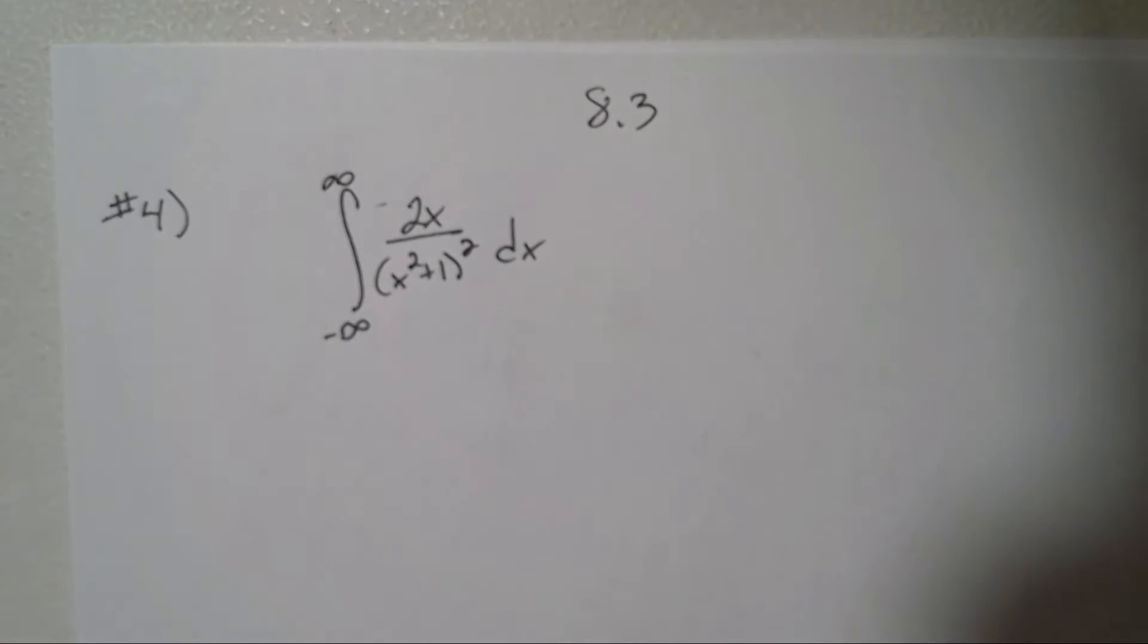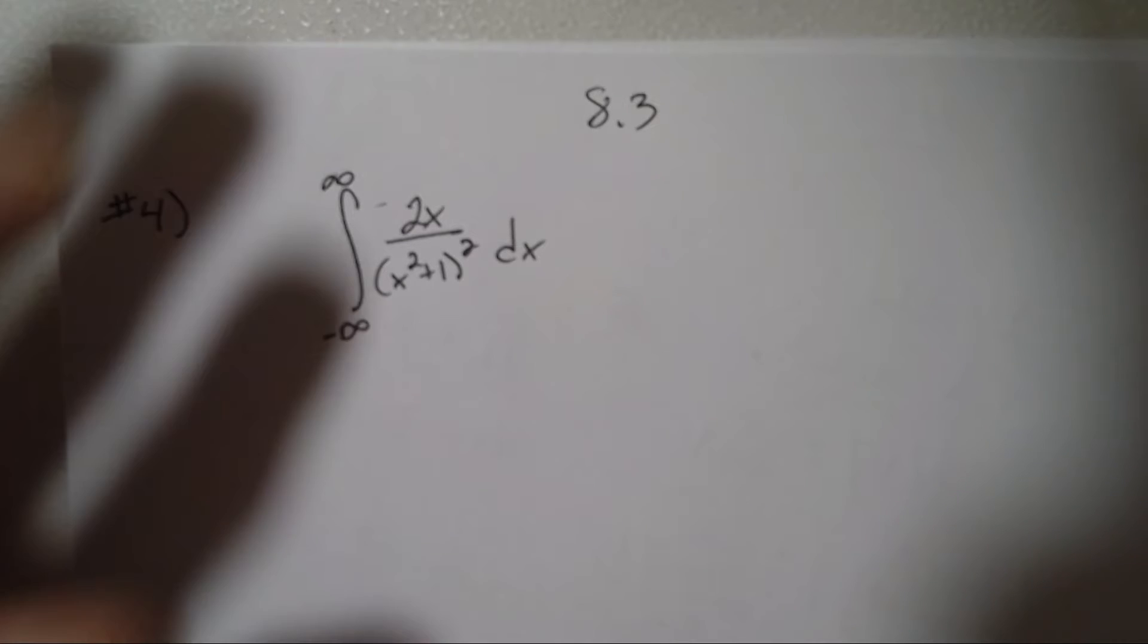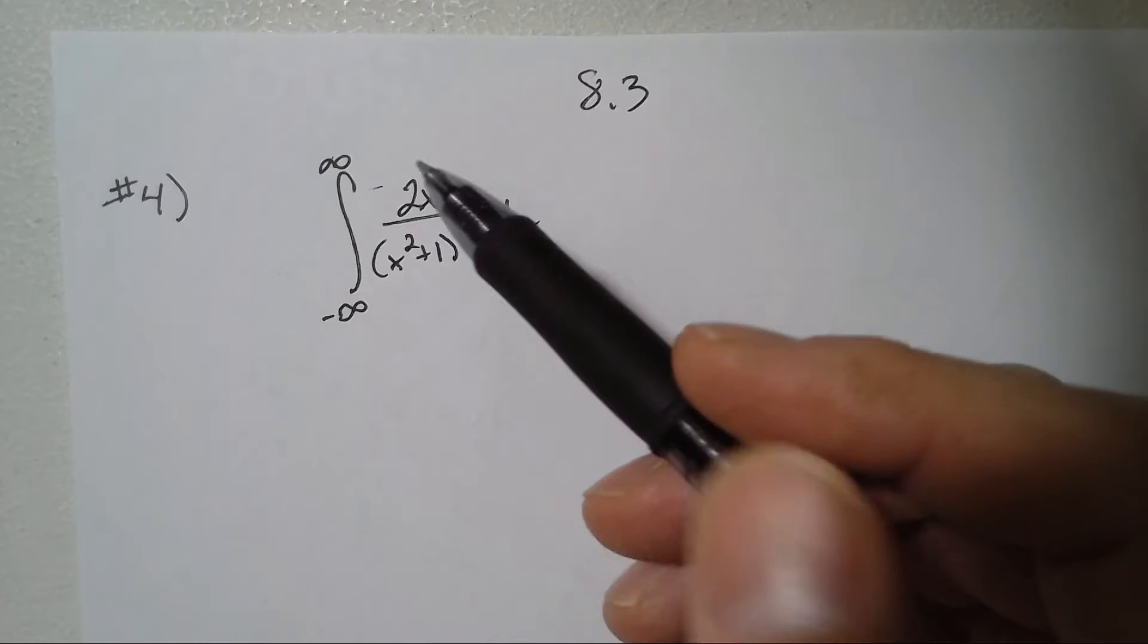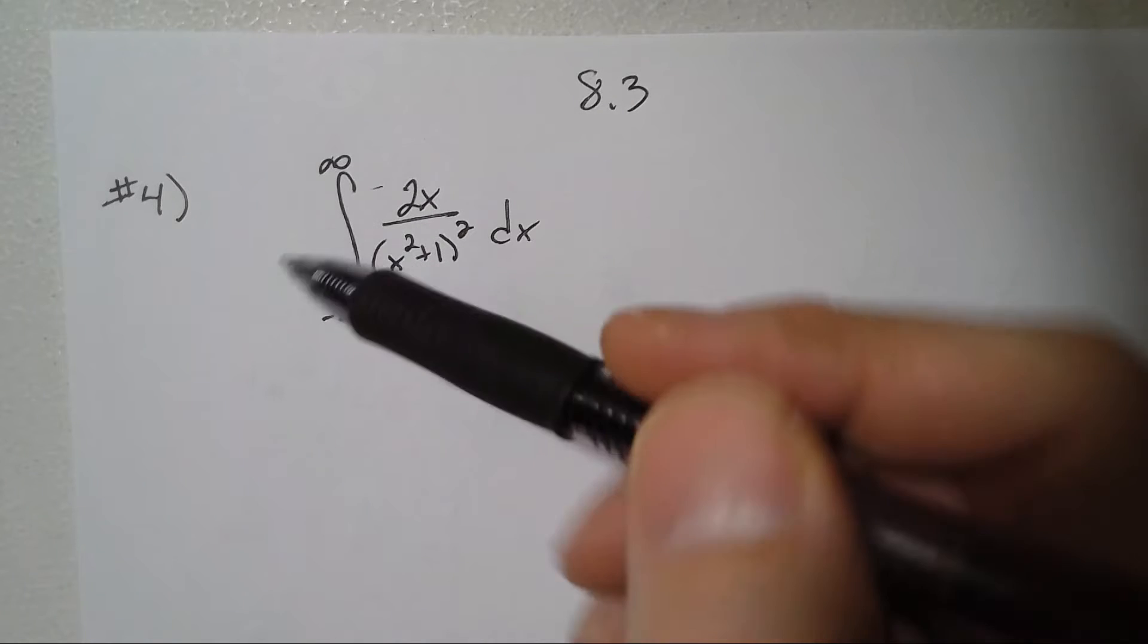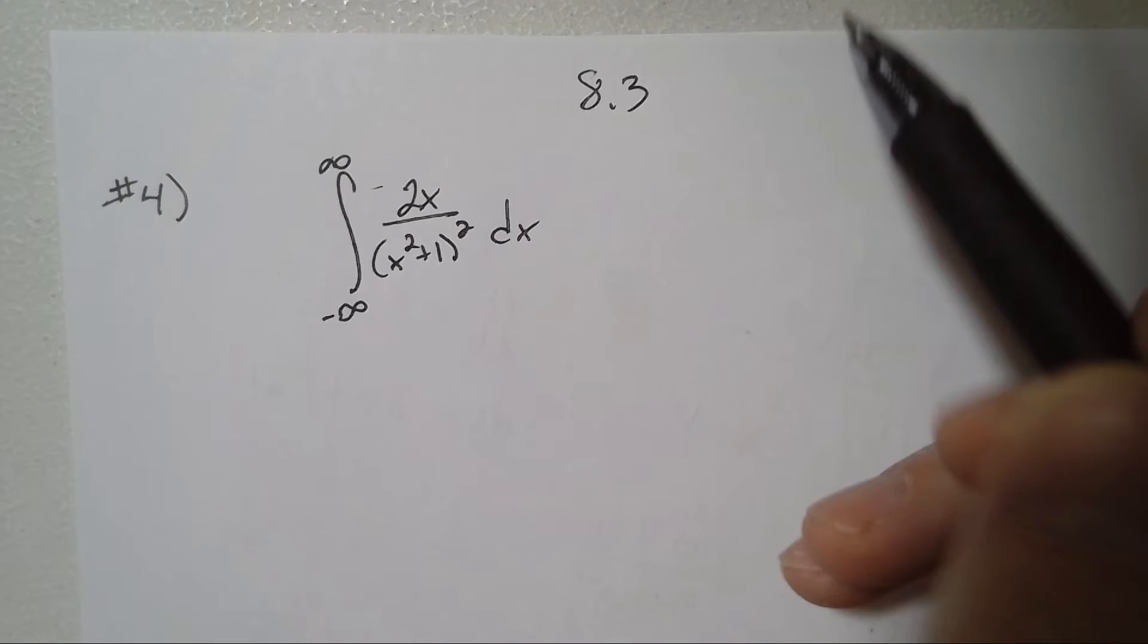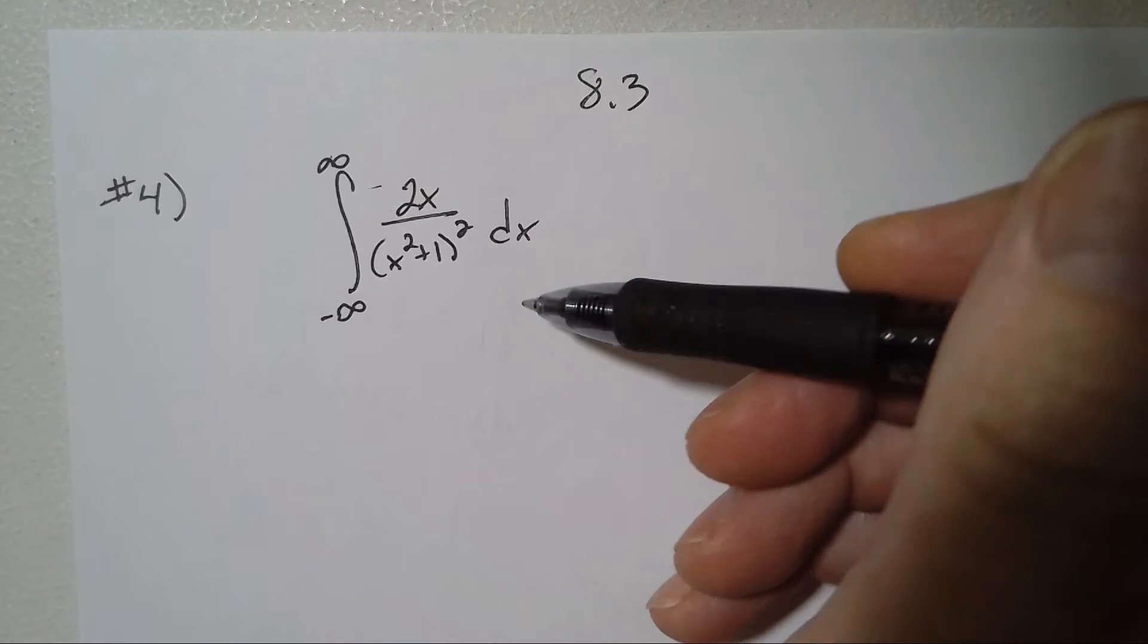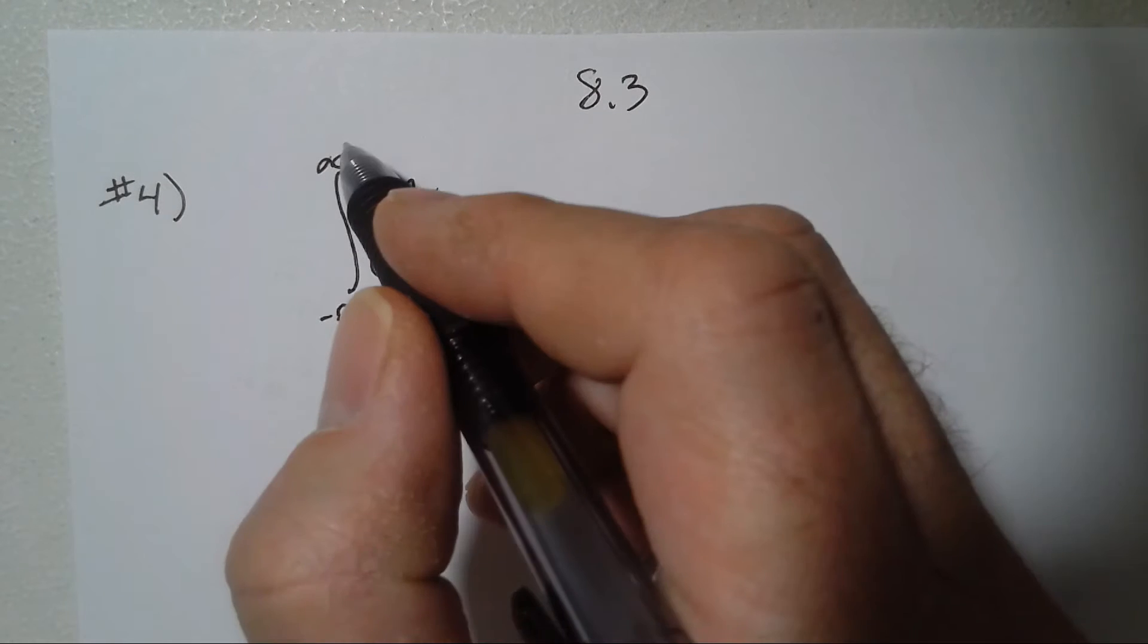Problem 8.3 number four says state why the integral is improper. An improper integral has either infinity as boundaries, which this one does (negative infinity to infinity), or points of discontinuity like infinite discontinuity on the inside. So this by itself or this by itself shows that it is an improper integral.